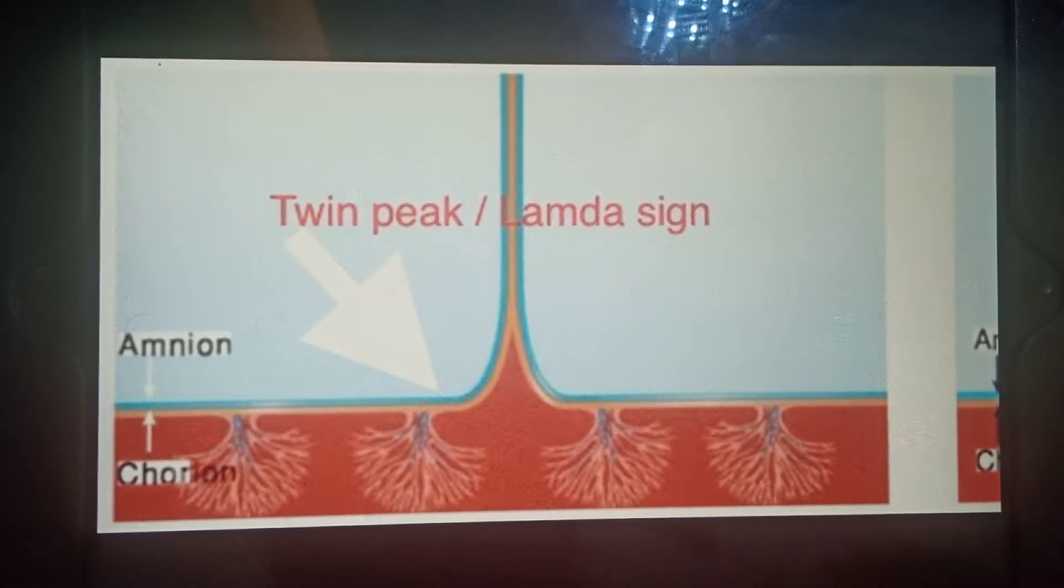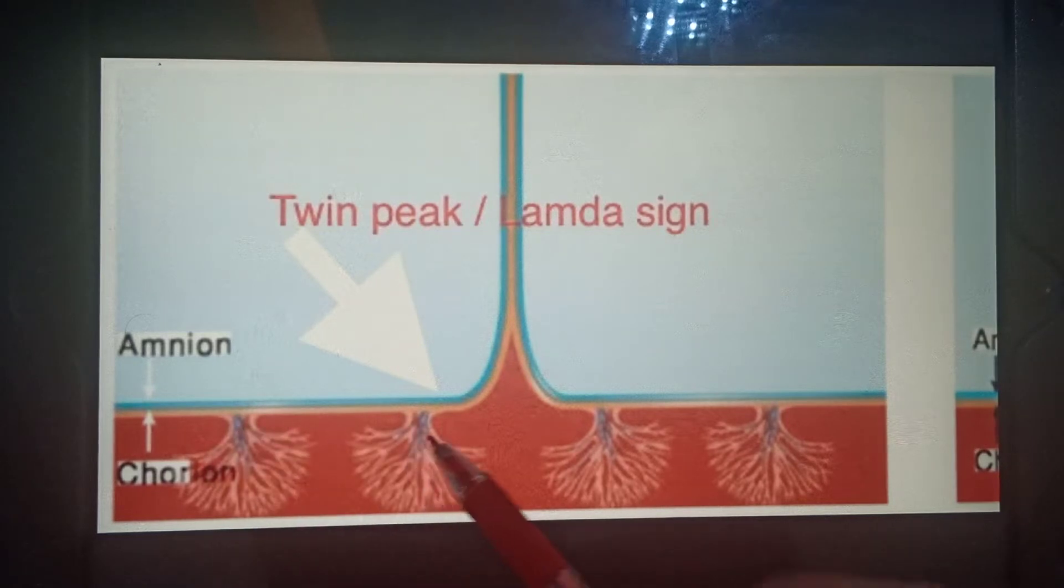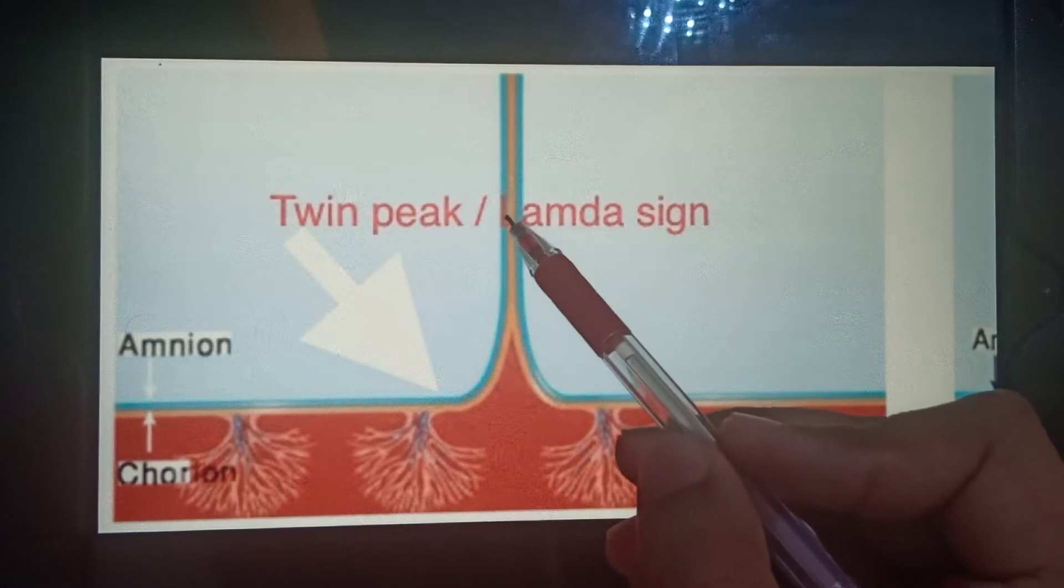These signs are seen in twin pregnancy. There are two layers in the placenta: one is the amnion layer and the second is the chorion layer.